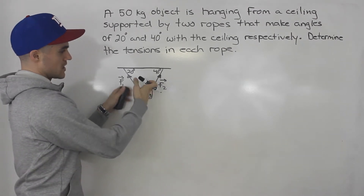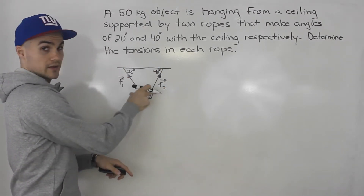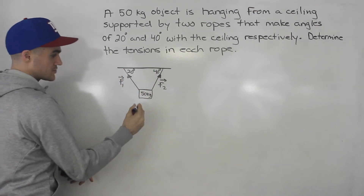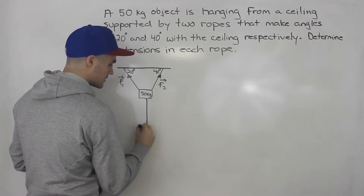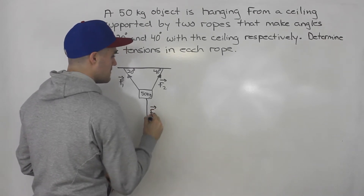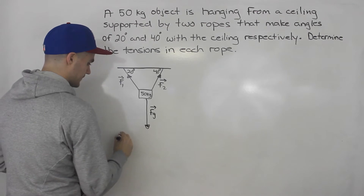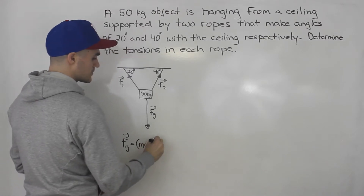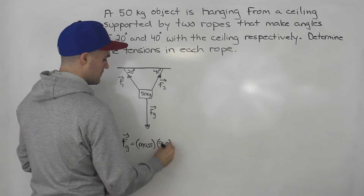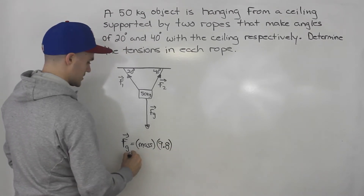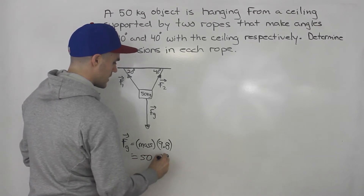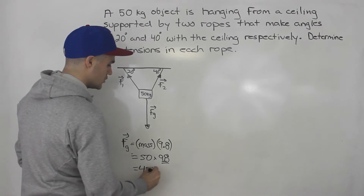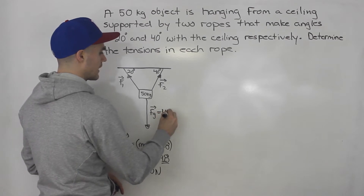So these two forces are acting on this object, supporting it and making it not fall due to gravity. There's also a third force acting on this object: the force of gravity. The force of gravity is always equal to the mass of the object in kilograms times 9.8. So the mass of this object is 50, multiply it by 9.8 — you'll probably see this constant in your textbook — we get 490 newtons. So the force of gravity is 490 newtons.